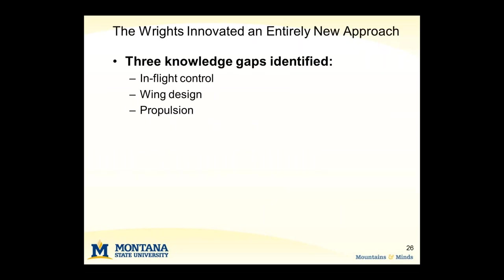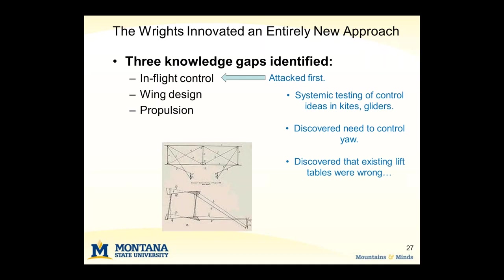From my perspective, they actually innovated an entirely different approach. One of the things they did is they first identified that they had some knowledge gaps — three are documented in their journals: in-flight control, wing design, and propulsion. The first one they tackled was how to get in-flight control. They did systematic testing on subsystem prototypes — gliders and kites — and came up with different ways to achieve that control. They discovered as they were towing one of their kites that they needed to control for yaw.